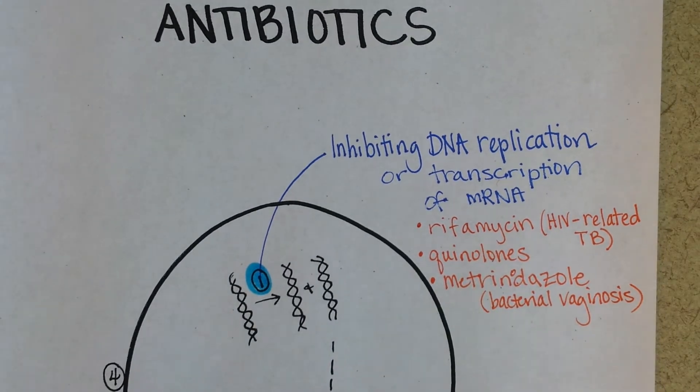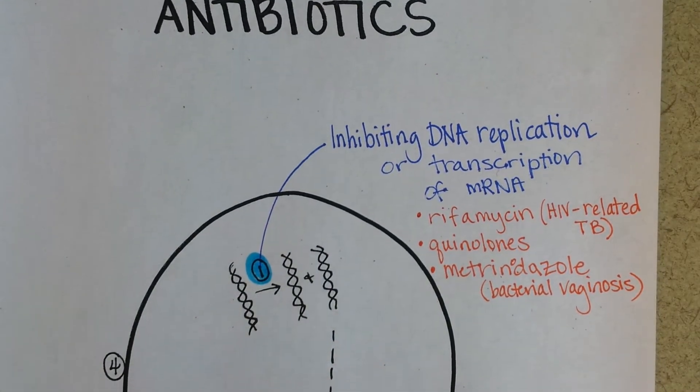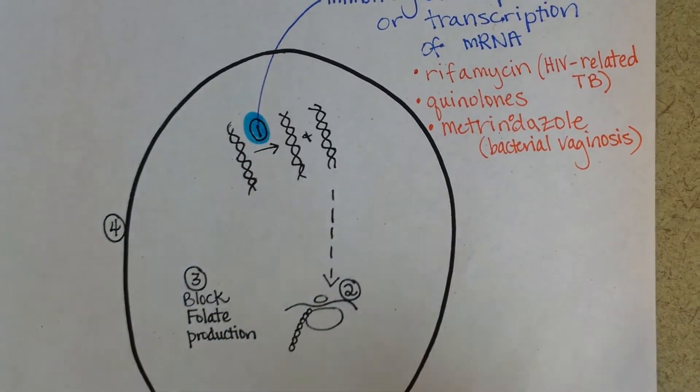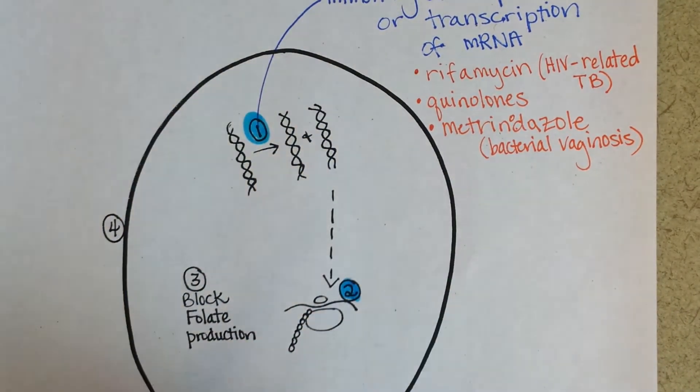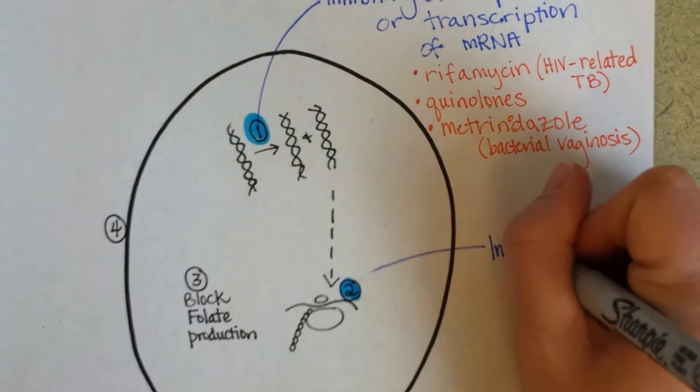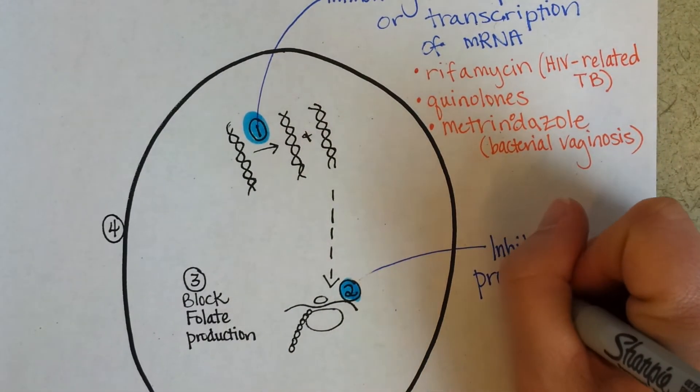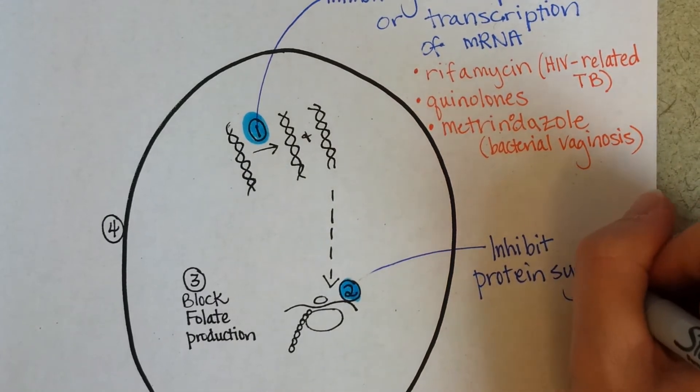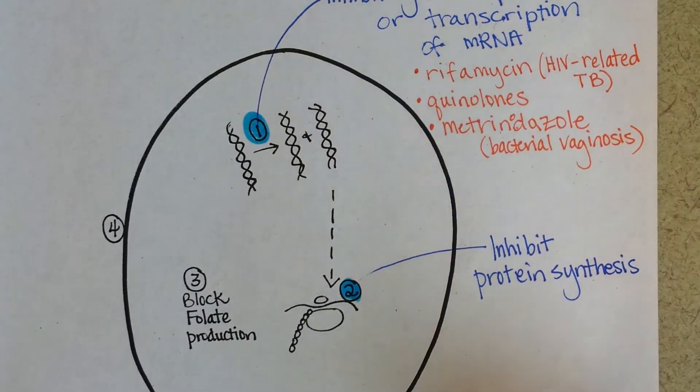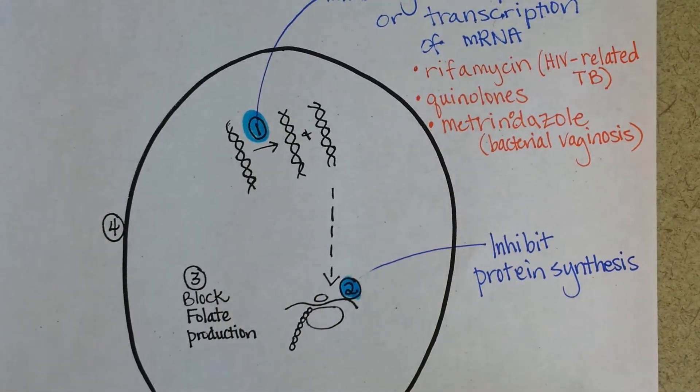Okay, a second way that an antibiotic could work is by inhibiting protein synthesis. So either stopping it right at the DNA level like a few of those examples, or inhibiting protein synthesis.